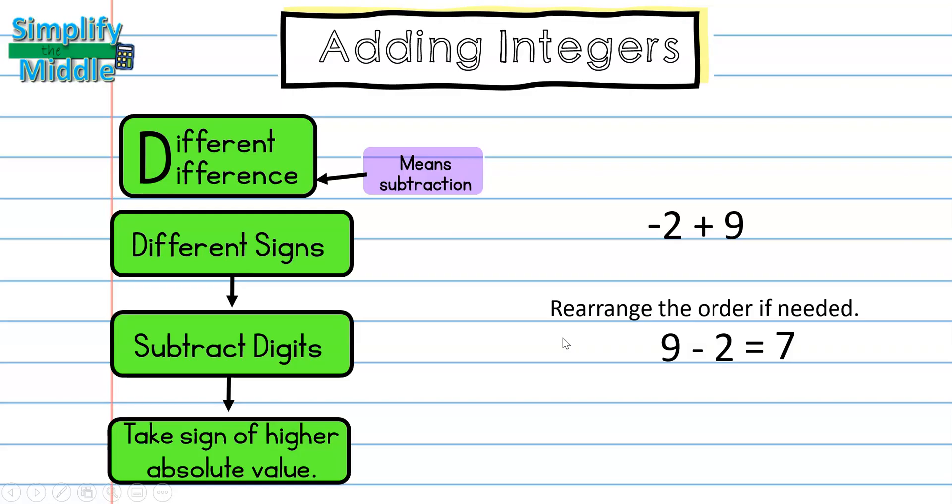So, when I subtract them, I get 7, and now I need to find what type of sign goes on the answer. So, I know my answer is either going to be positive 7 or negative 7. So, I'm going to find the absolute value from the original numbers in the problem.